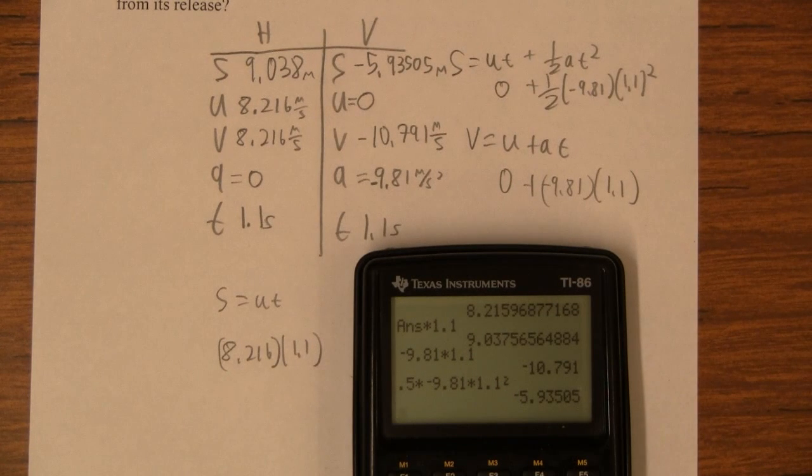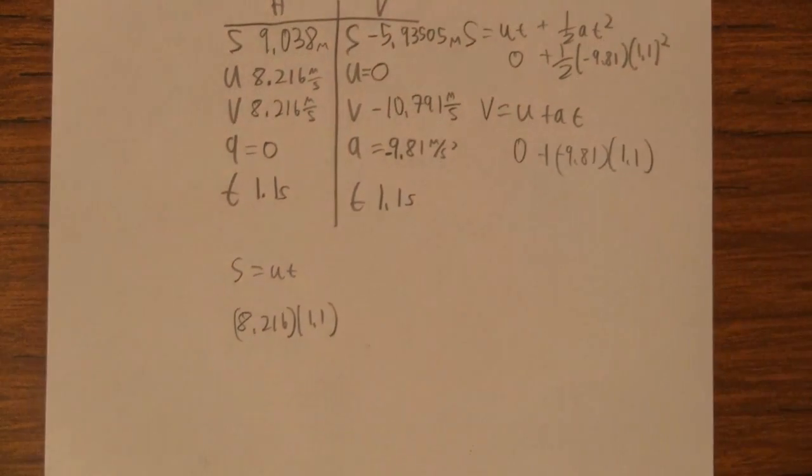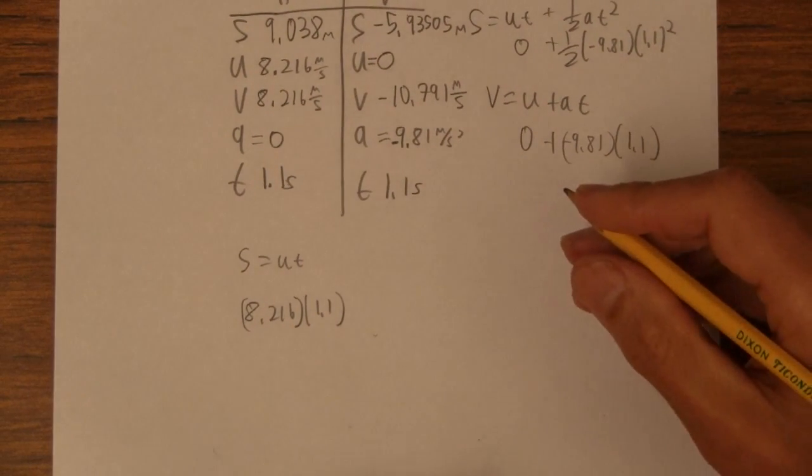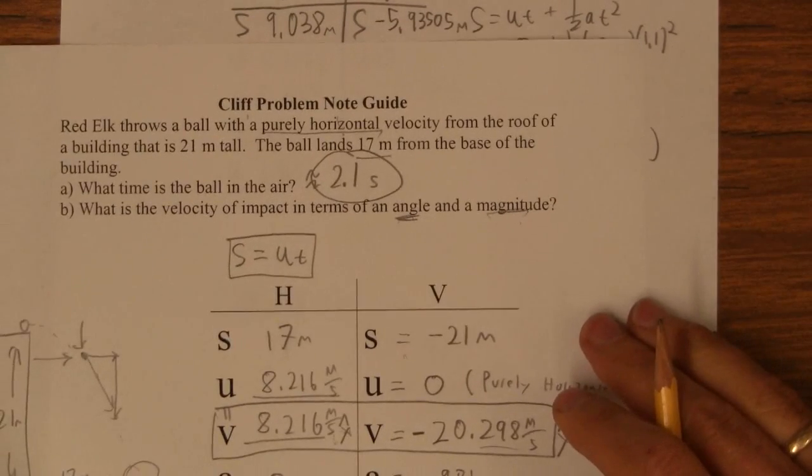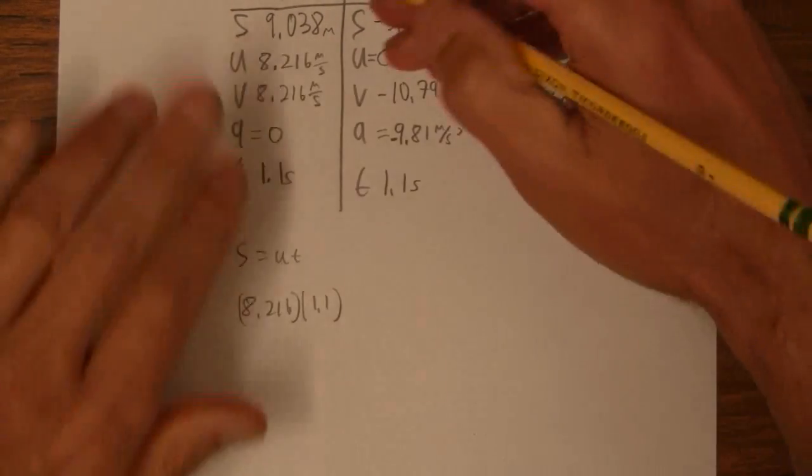So now we've filled in the table here, and it asks for the velocity and the position of the ball at exactly 1.1 seconds from its release, right? Okay, well, the position of the ball is easy. Here it is, and there's no easier way to do this, right?